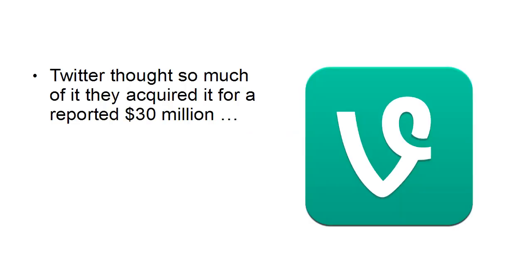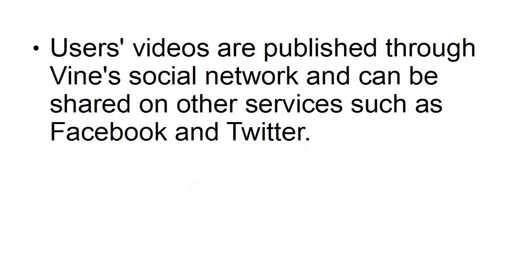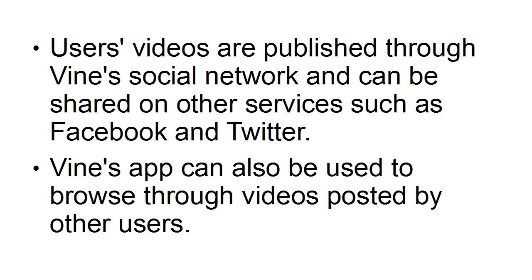Then there's Vine. Vine is a social network where people can share six-second looping videos. Twitter thought so much of it that they acquired it for a reported $30 million, and that was before its official launch. As of December 2015 — the last statistics available — Vine had 200 million active users. Users' videos are published through Vine's social network and can be shared on other services such as Facebook and Twitter. Vine's app can also be used to browse through videos posted by other users.